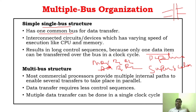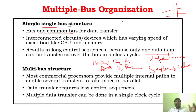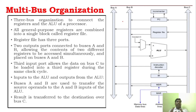Superscalar operation is where instead of fetching one instruction at a time, the processor fetches more than 5 or 10 instructions at the same time. For example: MOVE R1 R2, ADD R1 R2, LOAD R1 R2 — fetching many instructions and executing them parallelly. That is called superscalar operation.